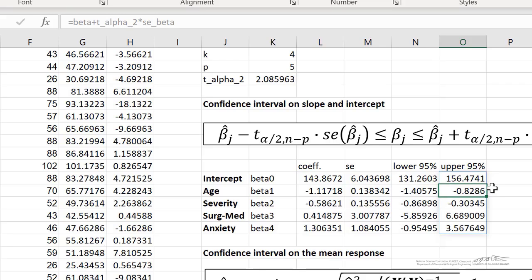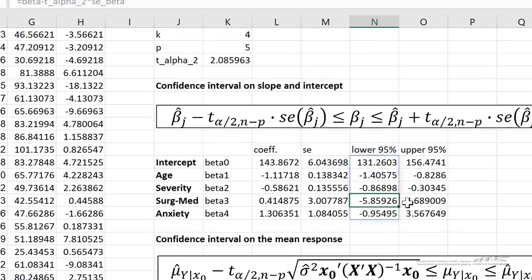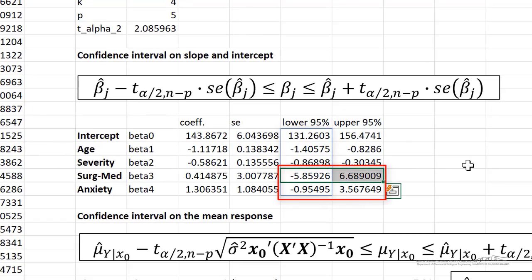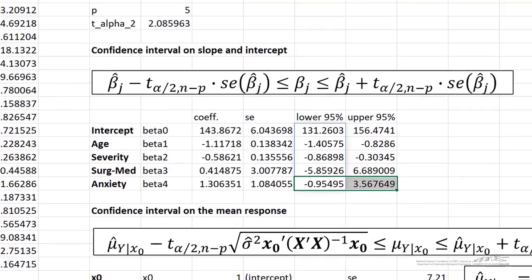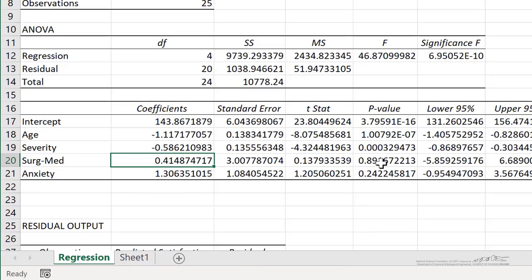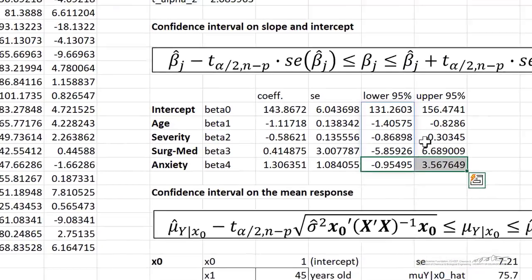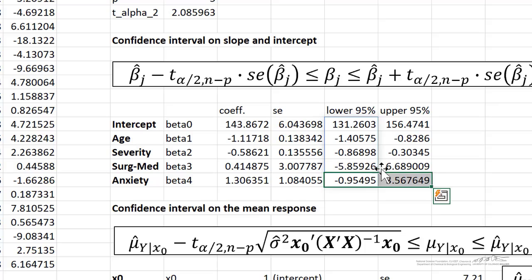It's important to take a look at the confidence intervals to see if they include zero. We do see that this contains zero. So surge med, that parameter, that's a categorical regressor, that does contain zero, as does anxiety. In a previous screencast, I showed you that the p-values for those two parameters, that would be x3 and x4, are pretty high, 0.89 and 0.24. And we get the same conclusion when we look at confidence intervals because those two both contain zero.